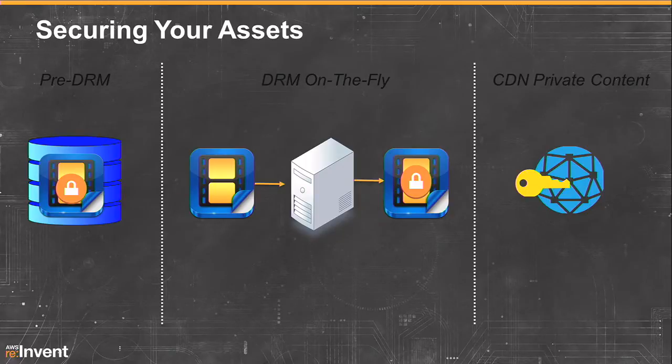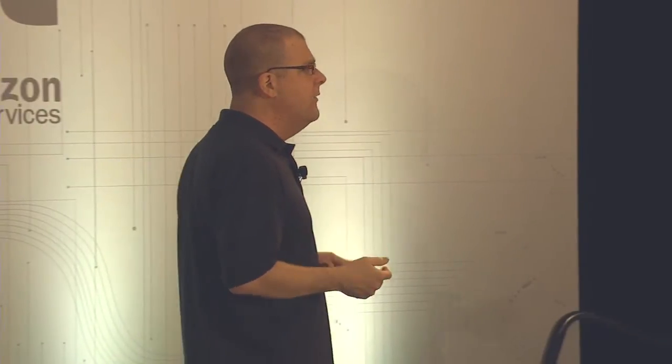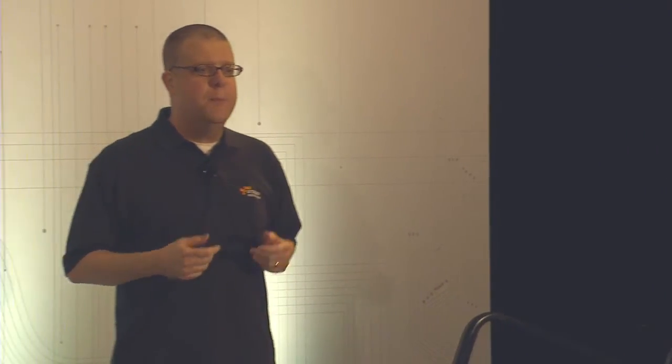Securing your asset is another area where there's not a pure right answer — it's more about what's right for you. There are three basic models: two in the DRM space and one called private content. DRM uniquely encrypts your videos and you hand out keys to viewers — you can store encrypted assets in S3 and deliver them through CloudFront, or run a DRM service on the fly. CDNs like CloudFront also offer a private content feature — sometimes called tokenized security — that allows you to sign requests specifying validity period, specific assets, and IP address ranges to control who's accessing your content.